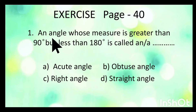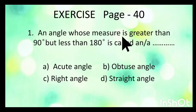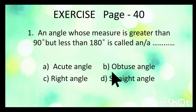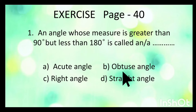The question asks for an angle whose measure is greater than 90 degrees but less than 180 degrees. The angle which is greater than 90 degrees is an obtuse angle, and this obtuse angle is less than 180 degrees. So the answer will be obtuse angle.